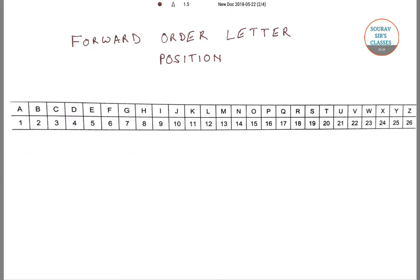In forward order letter position, the positions are counted from left to right. In other words, one starts counting from A and goes towards Z. So the position of A in forward order letter position is 1, B is 2, and so on till Z is 26.